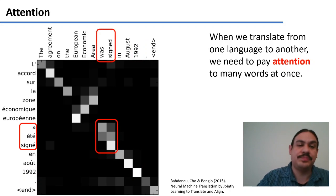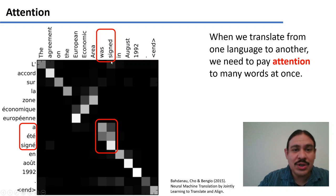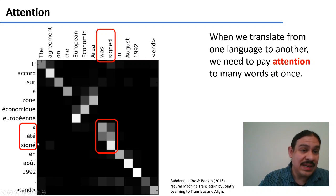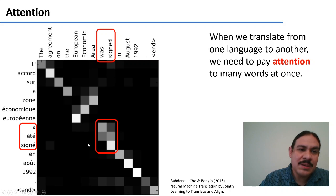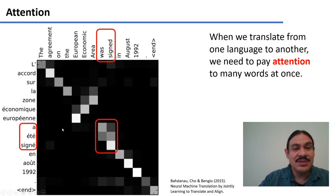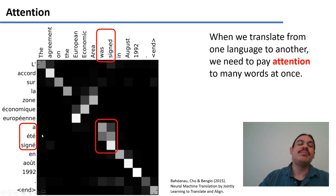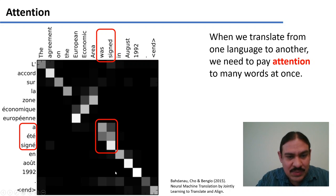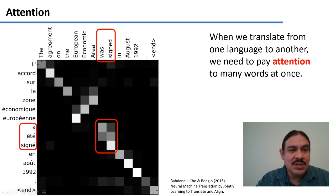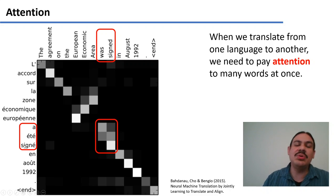However, most things in language are not so easy. When you're generating the word 'signé', you do need to look at the English verb 'signed'. But because this has agreement with the subject — if this was feminine, for example, it would have another E — you also need to pay attention to the subject. So most of your attention when generating 'signé' goes to the word 'signed', but also a little bit to the word 'agreement'. When generating another word, you need to pay attention to 'was' and 'signed' in English to get the correct tense in French. We call this process attention.